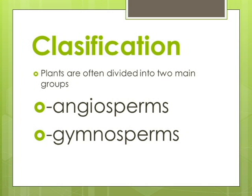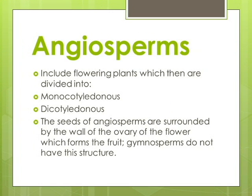Plants are often divided into two main groups: angiosperms and gymnosperms. Angiosperms include flowering plants, which are then divided into monocotyledonous and dicotyledonous. The seeds of angiosperms are surrounded by the wall of the ovary of the flower, which forms the fruit. Gymnosperms do not have this structure.